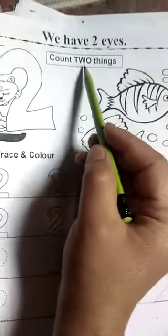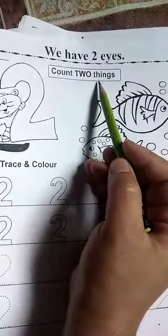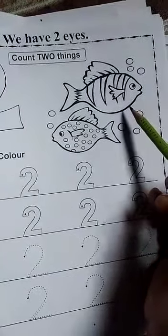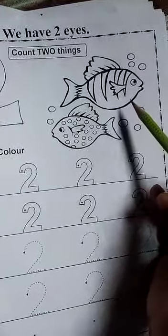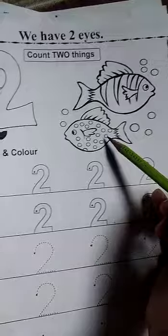Okay, next is count two things. We have two things to count. Like, this is fish. These are fishes. One, two. Count with me. One, two.